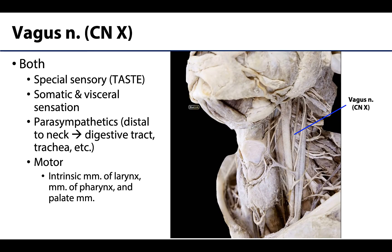Cranial nerve 10, the vagus nerve, plays important roles in efferent innervation for the intrinsic laryngeal muscles, pharyngeal muscles, and portions of the palate. It contributes preganglionic parasympathetics in the head and neck region for the tracheobronchial tree and esophagus via the pulmonary and esophageal plexuses, but most of its parasympathetic role is associated with the gastrointestinal system in the abdomen.